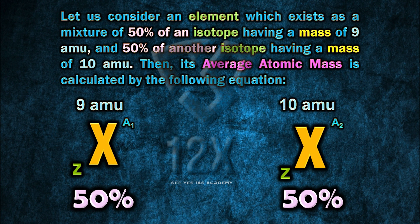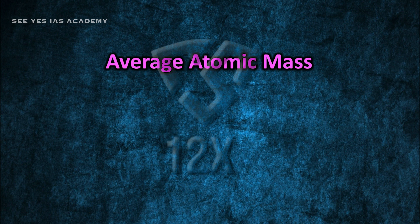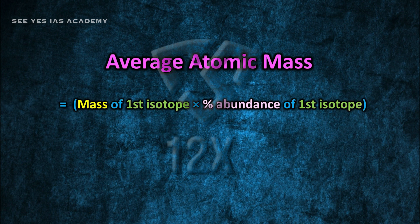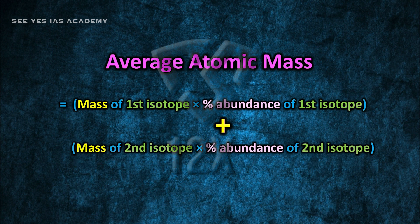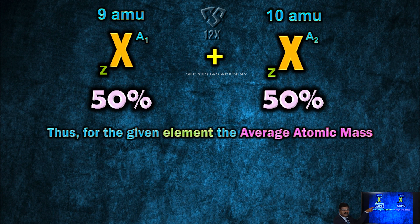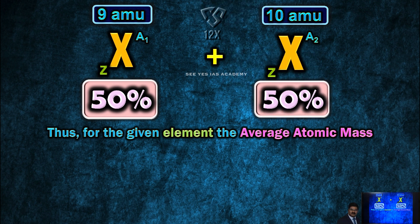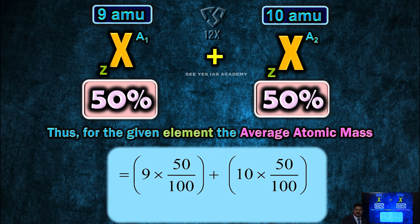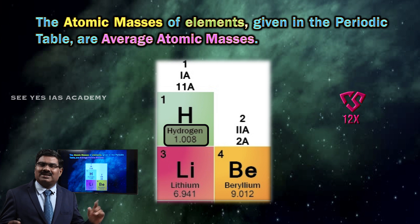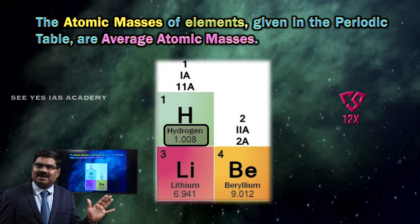Therefore, the average atomic mass equals (mass of first isotope × percentage abundance of first isotope) + (mass of second isotope × percentage abundance of second isotope). That is 9 × 50% + 10 × 50%, which equals 9.5 amu.